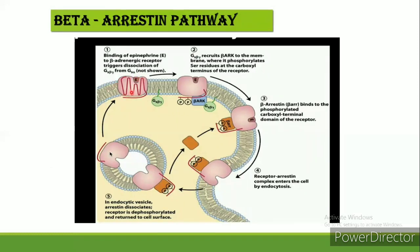Here is the receptor. When epinephrine binds to the beta-adrenergic receptor, it triggers the dissociation of the Gs beta-gamma subunit from the Gs unit. Desensitization of the beta-adrenergic receptor is mediated by a protein kinase that phosphorylates the receptor on the intracellular domain, which normally interacts with the G-protein.